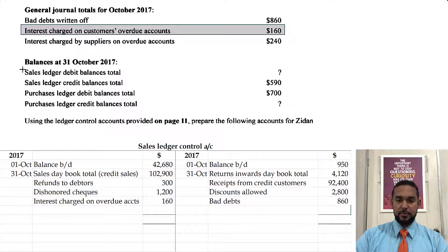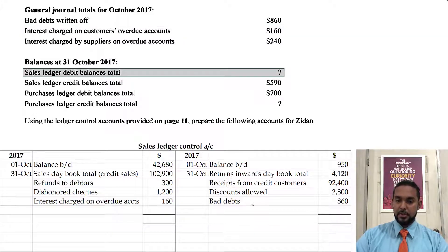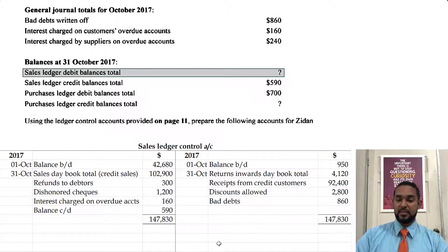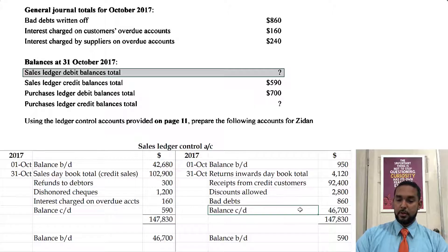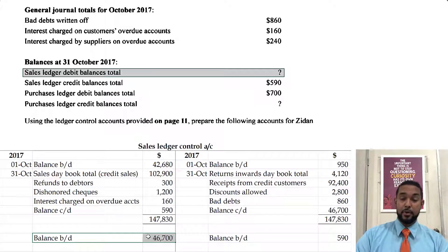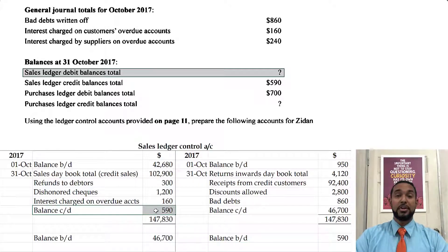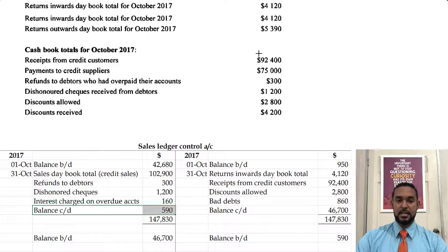We don't have the closing debit balance, but we have the closing credit balance, so that will be carried down from the debit side. If we total up that side we get 147,830. To find the balance, we simply find the total of the credit entries and subtract it from 147,830, giving us 46,700. Don't forget to bring down your balances — the closing debit balance is carried down from the credit side and brought down on the debit side. Similarly, the closing credit balance is carried down from the debit side and brought down on credit. That is the debtors control account.